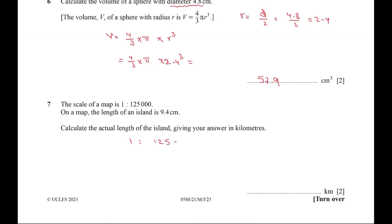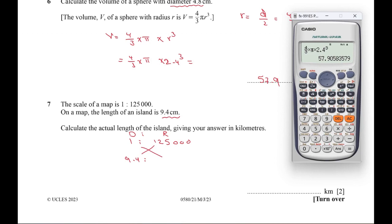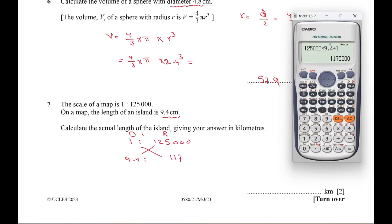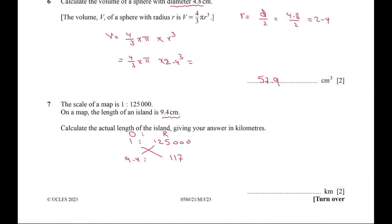The ratio is 1:125,000 - drawing to real. The drawing length on the map is 9.4 centimeters. Using a calculator: 125,000 times 9.4 divided by 1 equals 1,175,000 centimeters.